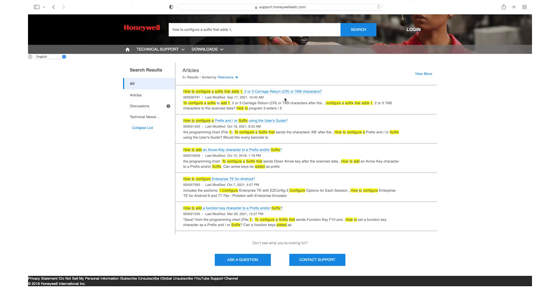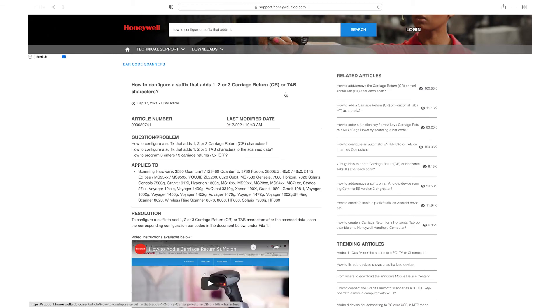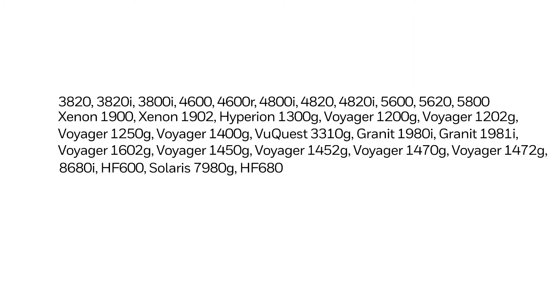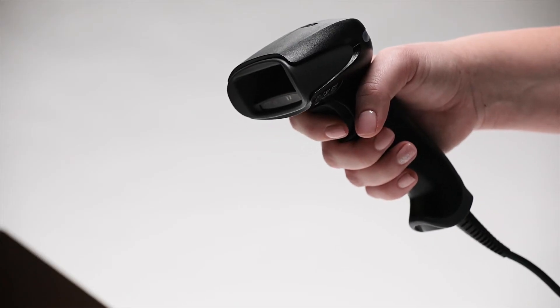To configure a carriage return or tab suffix on the following scanners, scan the barcode with the required suffix. For example, scan the barcode for three carriage returns to add three carriage returns.